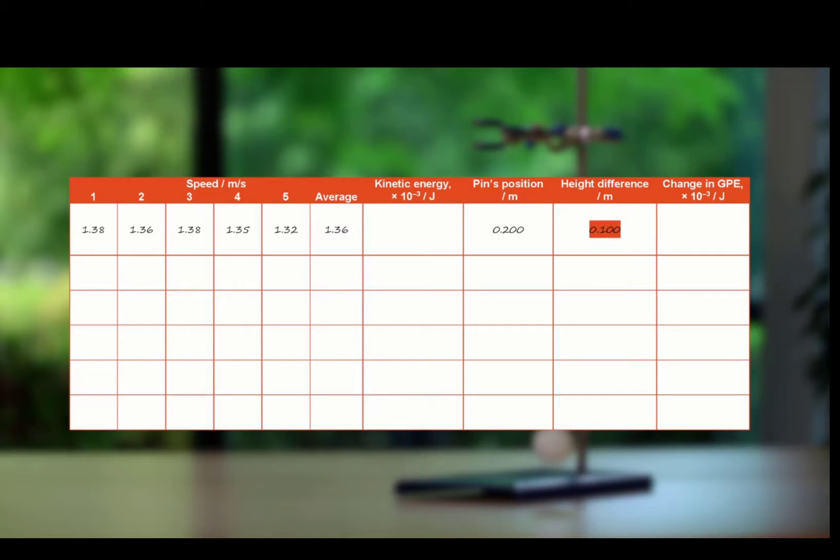The height difference between the light gate and the pin is also calculated. The kinetic energy is calculated using the equation a half times the mass times the speed squared. And the change in gravitational potential energy is calculated using the equation mass times gravitational strength times height.